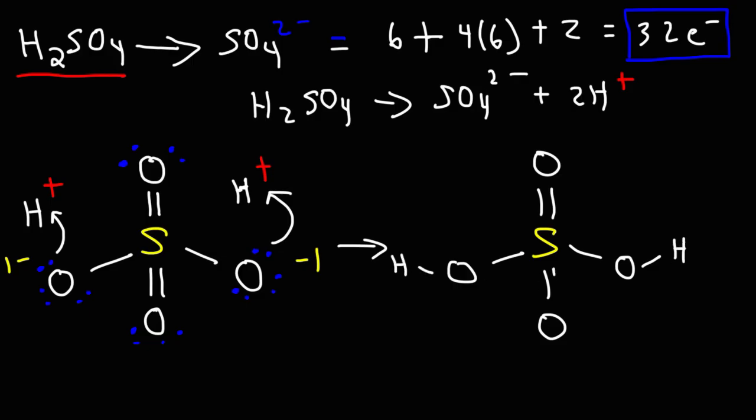In this structure, each oxygen atom now has two bonds, which means they will all be neutral in charge. So this is the Lewis structure of sulfuric acid, and that's how you can draw it.